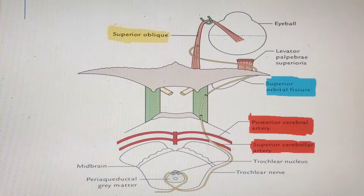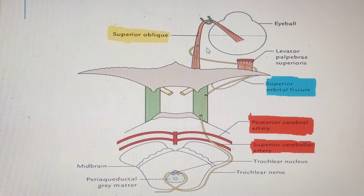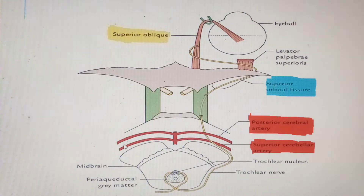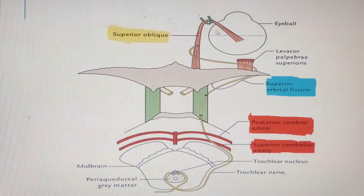This means the superior oblique muscle is supplied by the contralateral nucleus. For instance, fibers from the left nucleus will ultimately go to the right side, and fibers from the right nucleus will go all the way to the left side. So the superior oblique muscle is supplied by contralateral fibers.